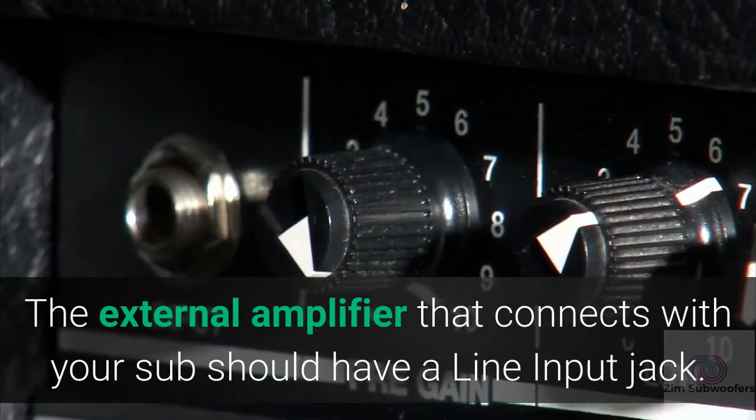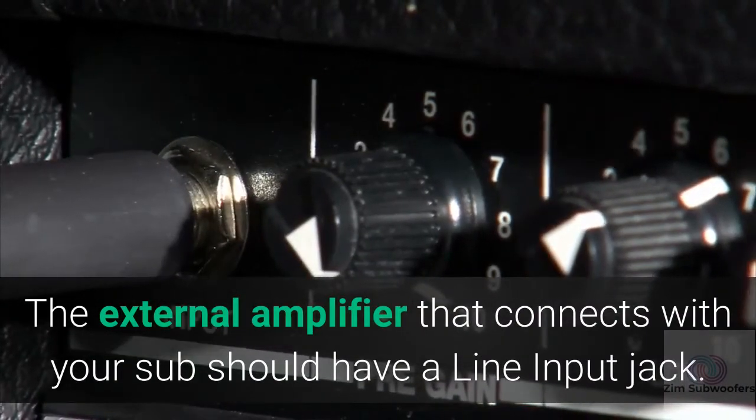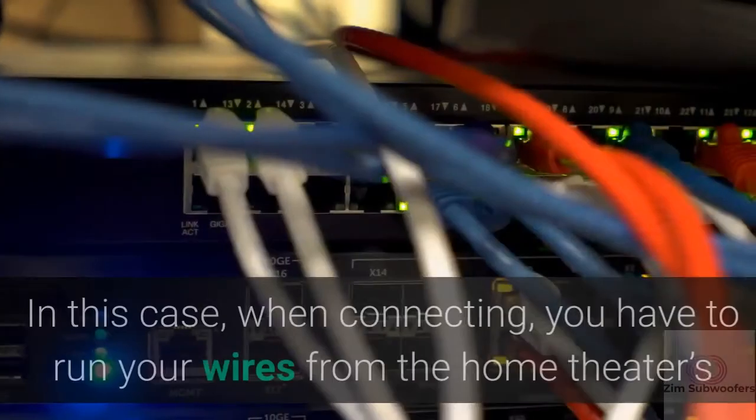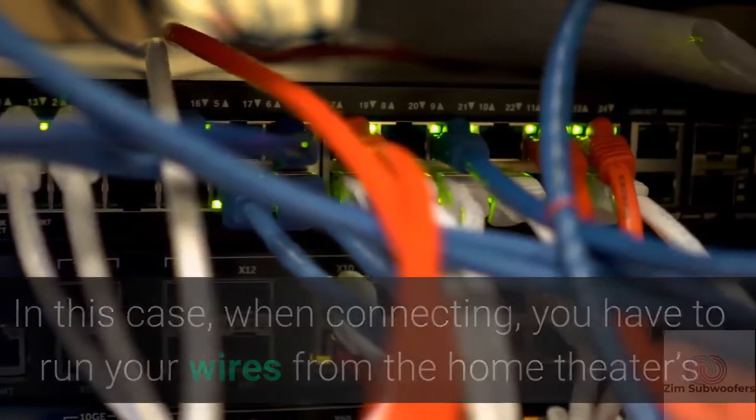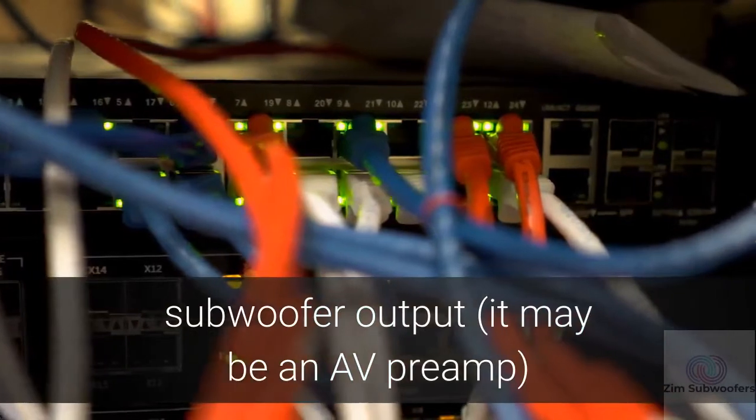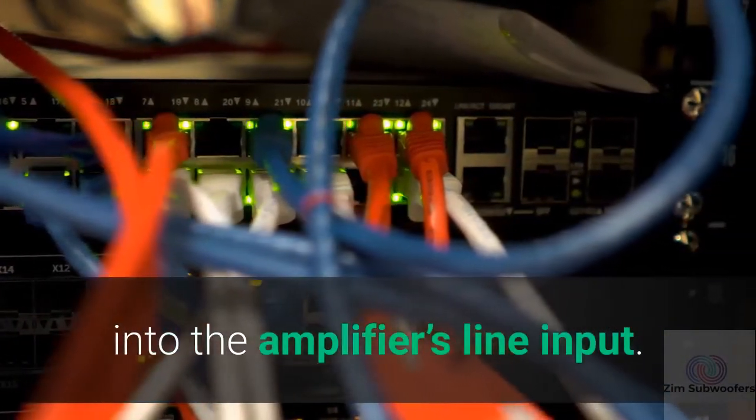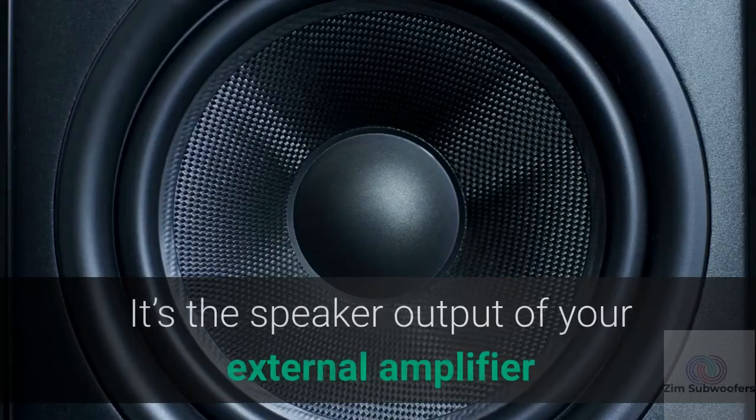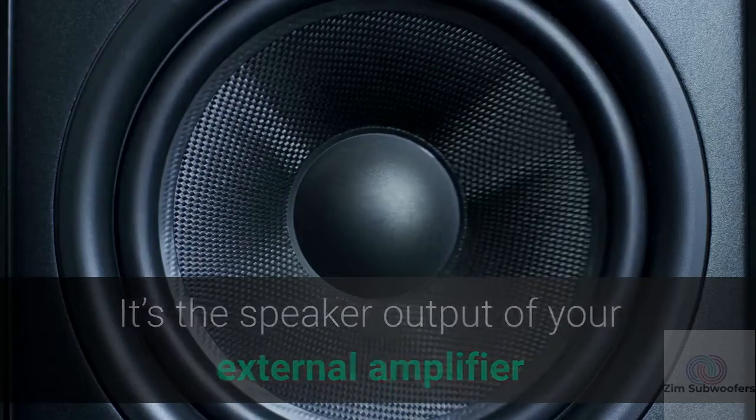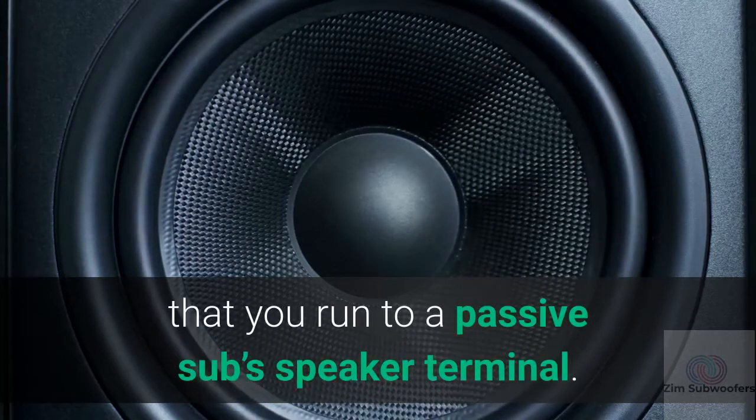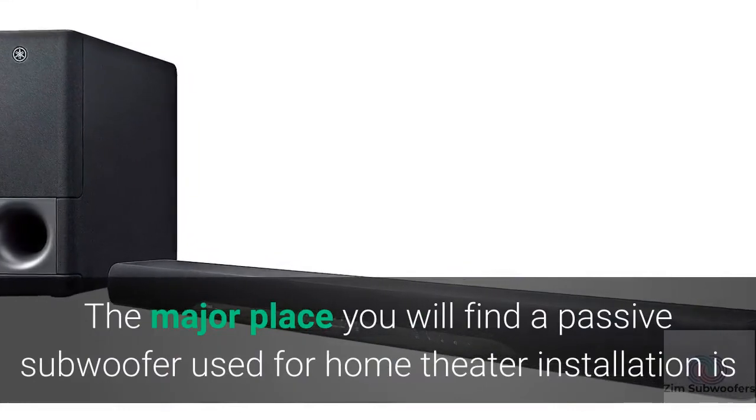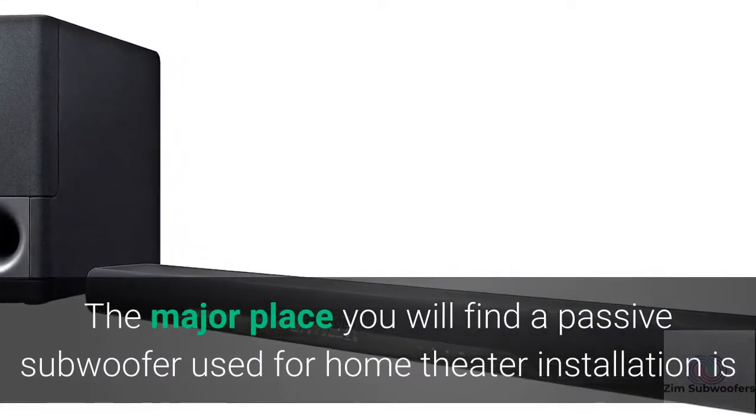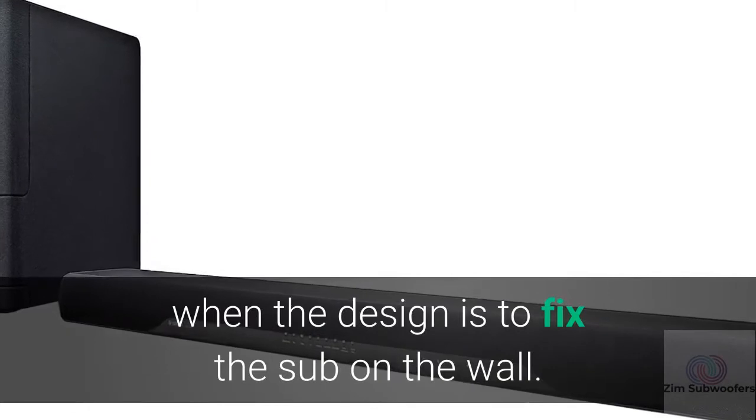The external amplifier that connects with your sub should have a line input jack. In this case, when connecting, you have to run your wires from the home theater's subwoofer output into the amplifier's line input. It's the speaker output of your external amplifier that you run to a passive sub speaker terminal. The major place you will find a passive subwoofer used for home theater installation is when the design is to fix the sub on the wall.